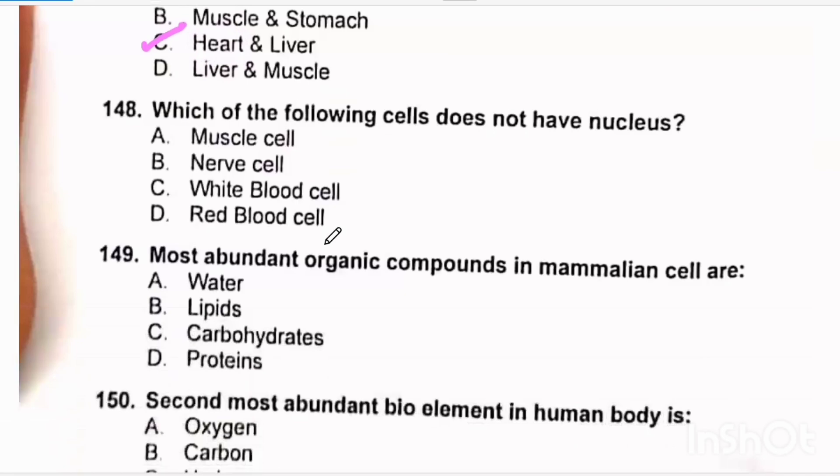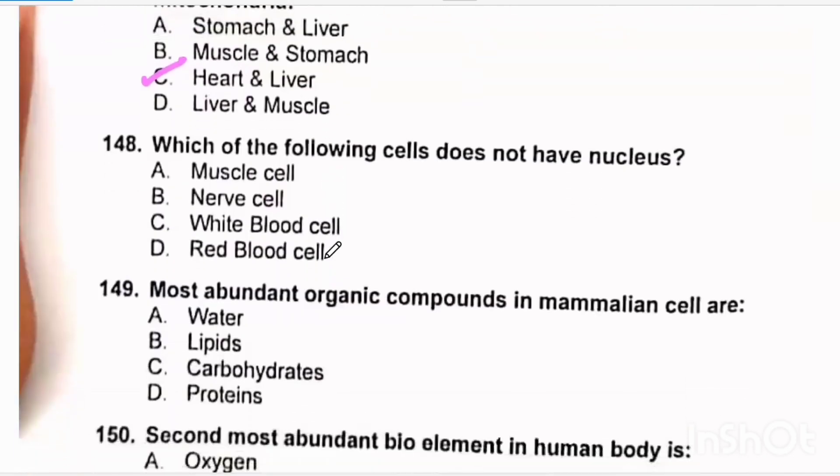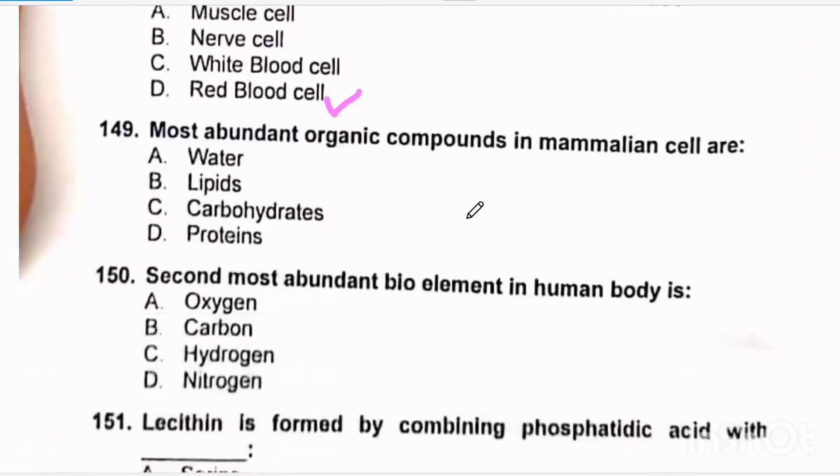Which of the following cells do not have nucleus? Red blood cells are anucleated. Most abundant organic compound in mammalian cell is protein. Most abundant inorganic compound is water. Read the statement carefully, identify the keywords, and then pick your option. The answer is delta.